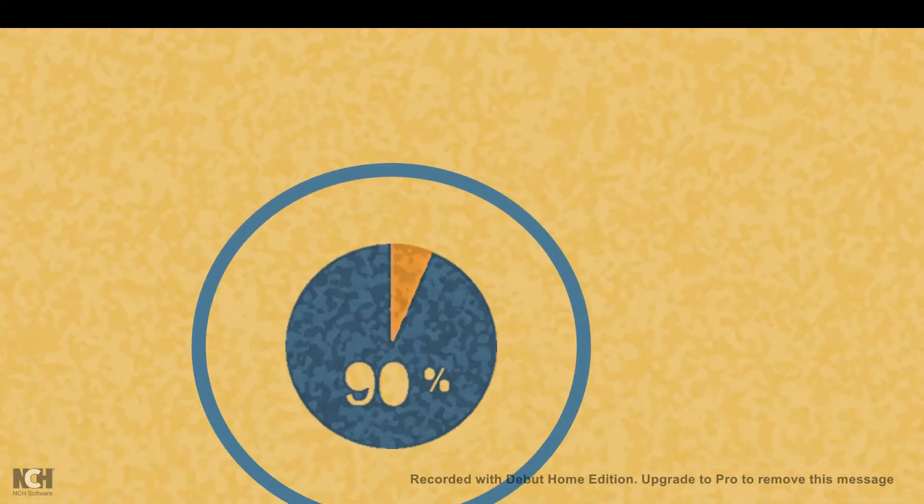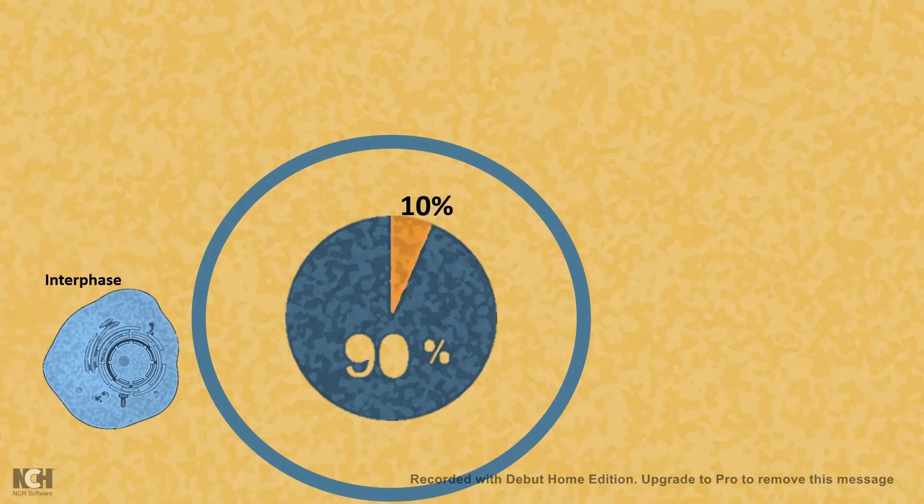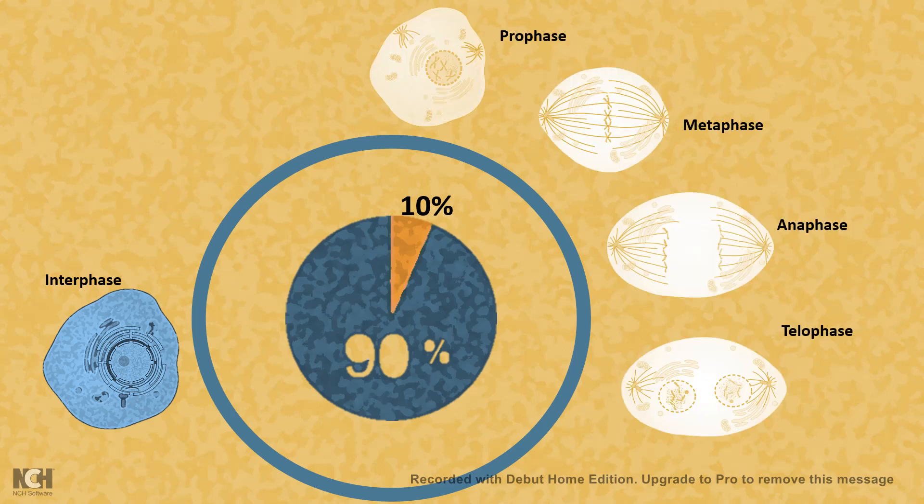The entire span of the cell cycle is divided into two subcategories: 90% of the time is devoted to interphase, which is a preparatory phase, and 10% of the time is given for the division phase or the mitotic phase.